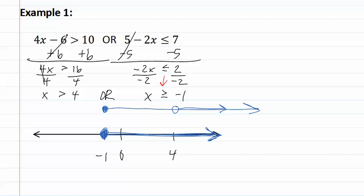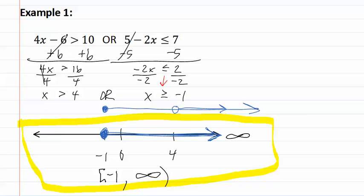Then we can write our interval notation. We start by writing a bracket for the closed dot, negative one because that's the point on the graph we are. We are going towards positive infinity which always gets a parenthesis. This is therefore our answer.